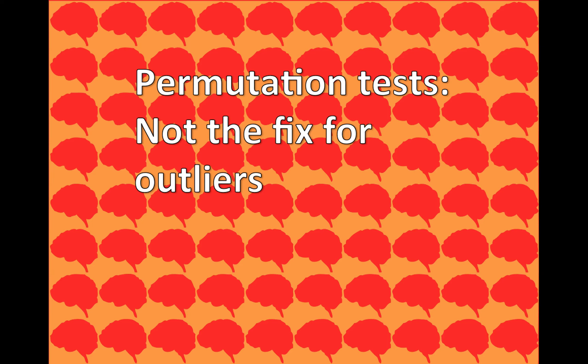Hello. In the last video I talked about outliers and how they can influence our analyses, and I mentioned that the nonparametric permutation test was not a magical fix for outliers. I said I would come back and explain why that is the case. This is it.